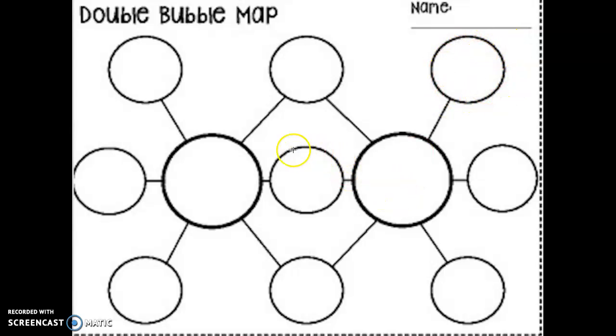If you choose, you can write in the middle that they both lost something. If there are not enough bubbles on this double bubble map for you, then add in a bubble so that it can work for you.